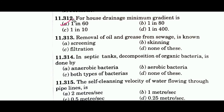Question 313 asks where oil and grease are removed from sewage. In screening, we remove floating particles. Skimming is a tank where we remove oil and grease. The flocs formed by oil and grease are very lightweight and can be separated from above. So skimming is the answer, option B.